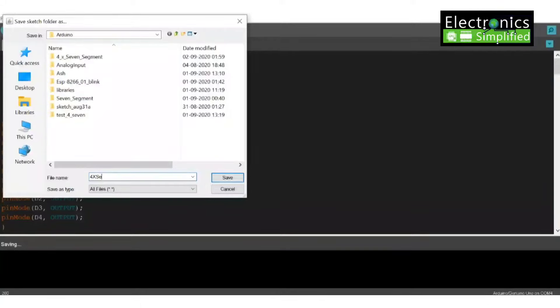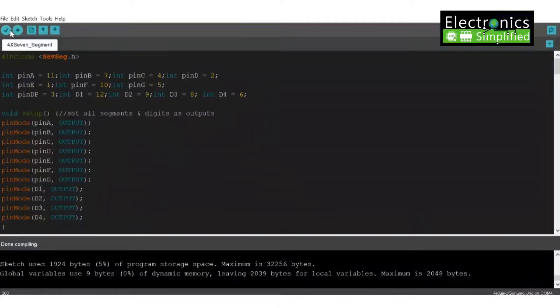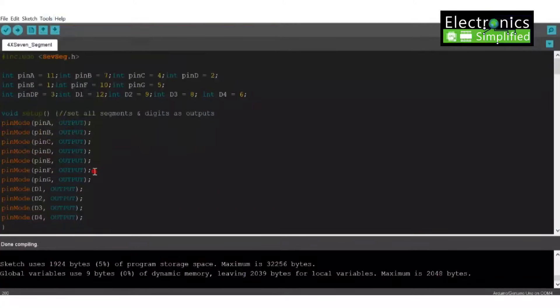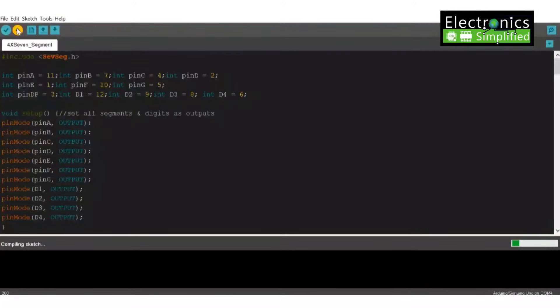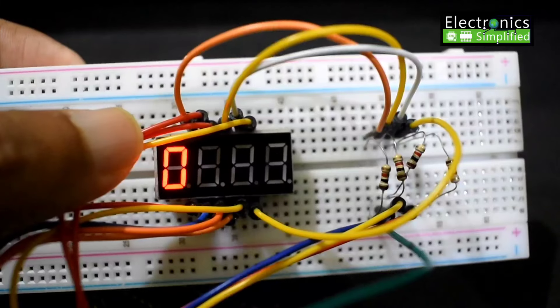And I am going to save it as 4x7 segment display. And once you are done saving it maybe you need to save it in a folder as well since you will be downloading the file. Compile it first. Then upload. So before uploading just check that your com port and your Arduino is connected. So now upload the file. Once you are done uploading you can check the output.